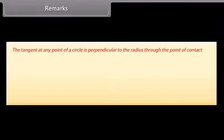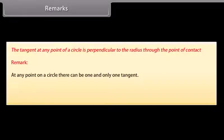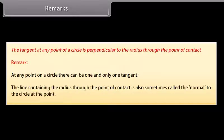From this theorem we can also conclude that at any point on a circle there can be one and only one tangent, and the line containing the radius through the point of contact is also sometimes called the normal to the circle at the point.